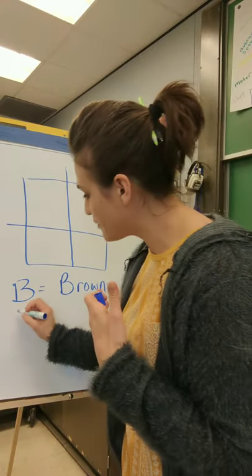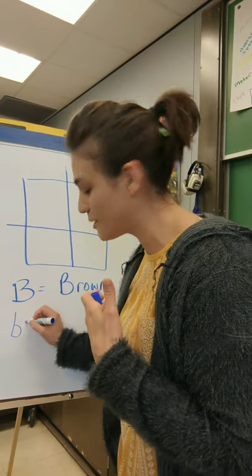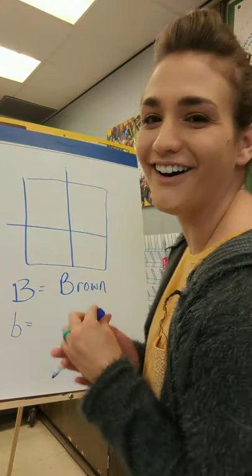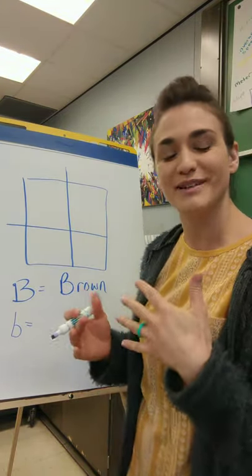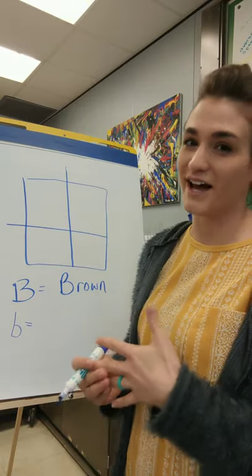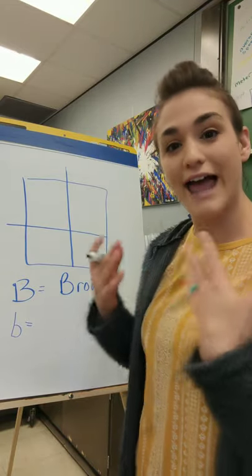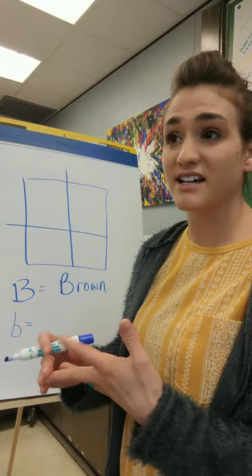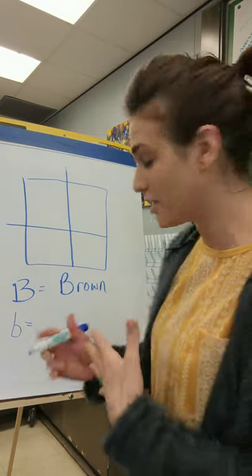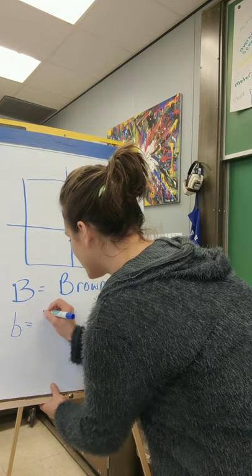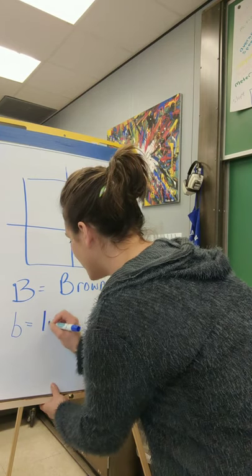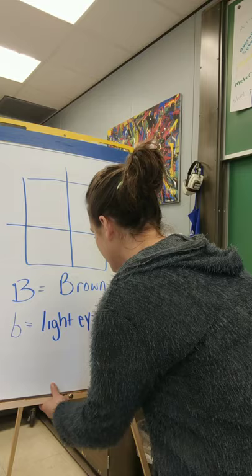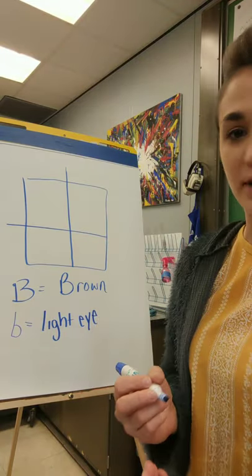If we use the lowercase b — I like to call it 'baby B,' it sounds more fun — that means any light-colored eye. So that means an eye with a lack of brown pigment: blue eyes, green eyes, gray eyes, hazel eyes, any light-colored eye you can think of. So this represents light eyes, or just anything that's not brown.